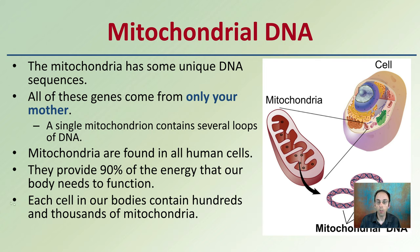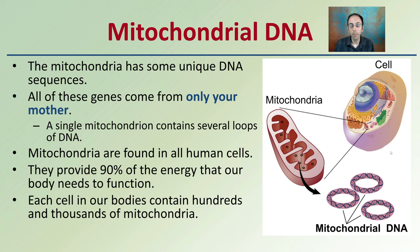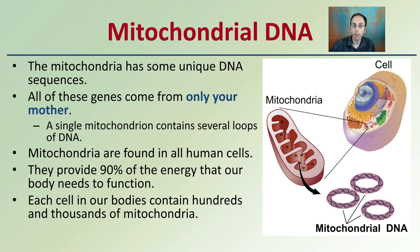Mitochondrial DNA — just the basics. Mitochondria does have some unique DNA sequences to it, and what's important to make note of is that all of these genes come only from your mother. A single mitochondria contains several loops of DNA, as you can see here, and this is in addition to the genes we have located in the nucleus. Mitochondria are found in all human cells, and they provide 90% of the energy that our body needs to function.